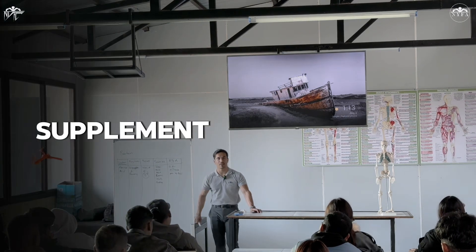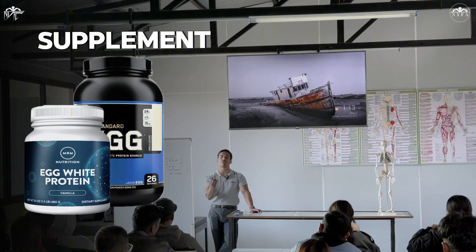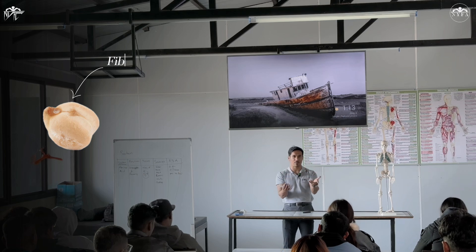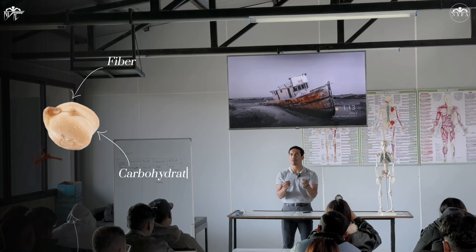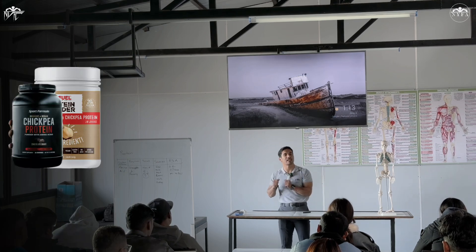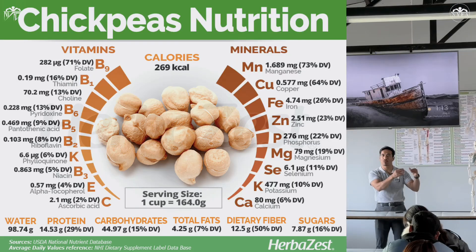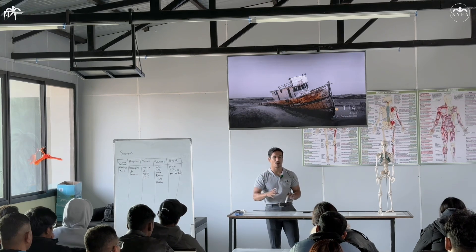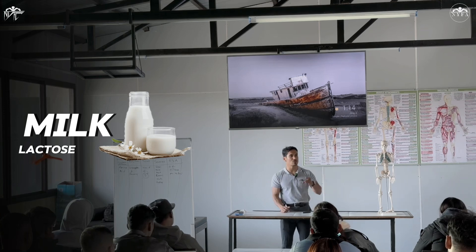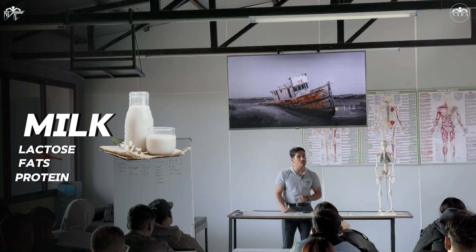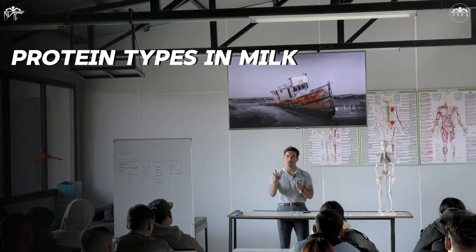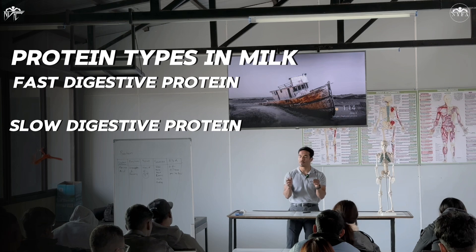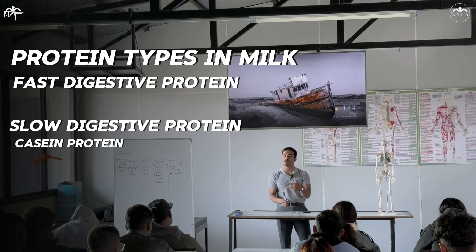Now, regarding supplements — protein supplements are usually available as powder. They are concentrated forms where fiber and fats are extracted, leaving protein. Examples include pea protein extract, and there are also casein and whey protein, which is a combination of two protein types.